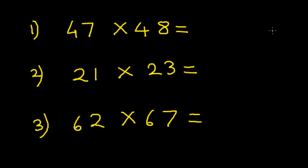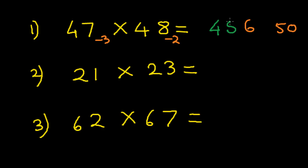Let's multiply 47 and 48. Since both these numbers are closer to 50, that's our base: 50. Subtracting 47 from 50 we get minus 3, and 48 from 50 we get minus 2. We multiply these two digits: minus 3 and minus 2 gives 6. Now we add 47 and minus 2, or 48 and minus 3 — either way the answer is 45. Now this is not the final answer. Although we selected base 50, in a sense our real base is 10, and 50 is 5 times our real base, so we have to multiply by 5 as well.